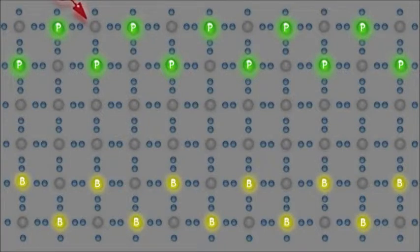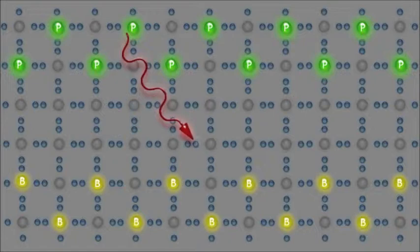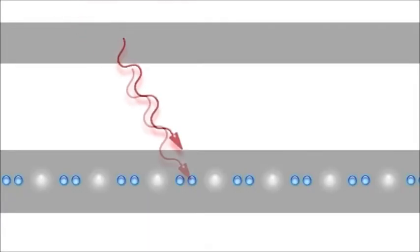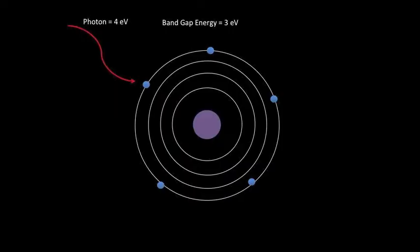As light enters a solar panel, photons hit electrons within the panel and cause them to become excited and break off from their original atoms, leaving holes in their place. Electrons have a threshold, or bandgap energy, which represents the minimum amount of energy necessary to knock electrons free from their atoms.